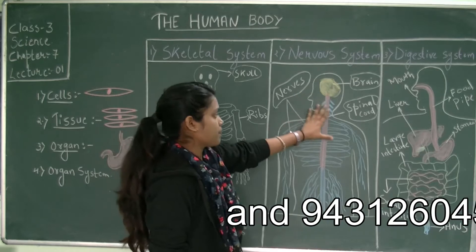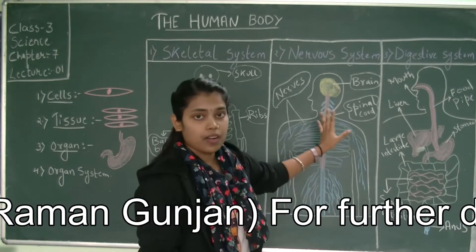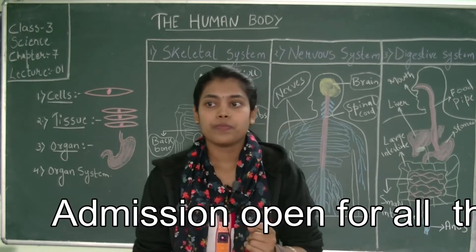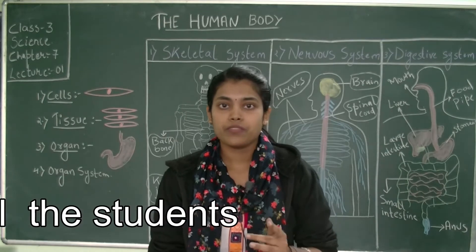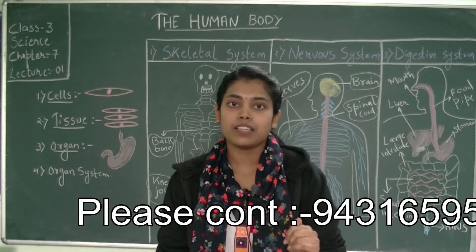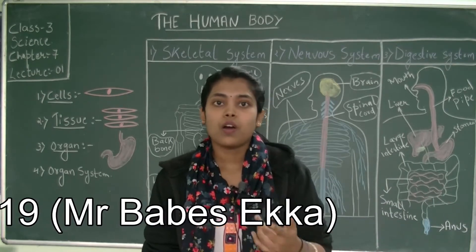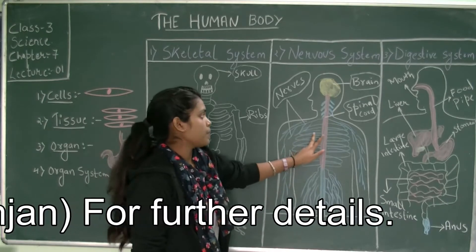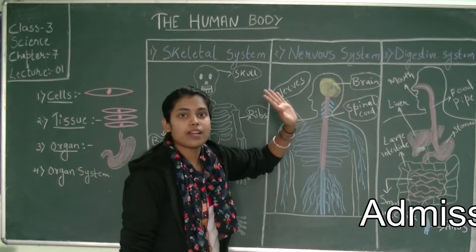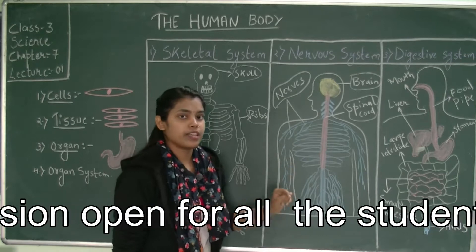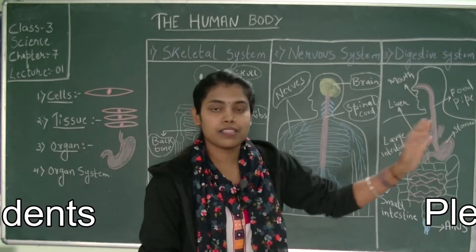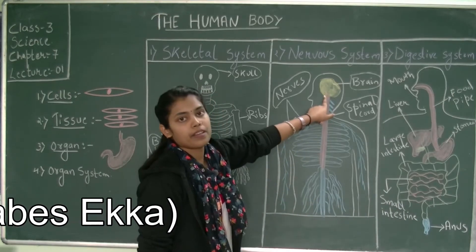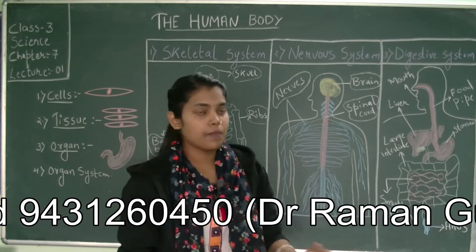Now let me explain the function of the nervous system. They are called the control house because they control every action. For example, if you touch a hot thing, you feel hot. How do you know that? All this message is processed by the brain, the nerves, and the spinal cord. When you touch a hot thing, the nerves travel the information and send a message to the brain, and through this you understand that the thing is hot. Similarly, if you touch a rough surface, the message travels to the brain — so all actions and activities are covered by the nervous system.